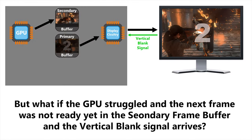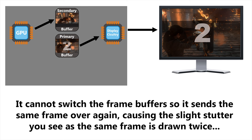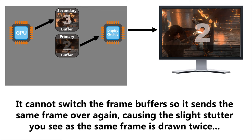But what happens if the action in the game ramps up on the next frame and the GPU can't keep up? What happens if the next frame isn't ready when the V-Sync signal arrives? The frame buffer can't be swapped, so the video card does the only thing it can do — it sends the monitor the same frame over again. This is the cause of that momentary stutter you see in a game. The next frame wasn't ready in time, so the same frame was shown twice. What if your GPU consistently just can't manage the 60 frames per second that this 60Hz monitor needs? If it's just slightly too late every time, the monitor's going to draw 60 frames per second, and if we're late and end up repeating a frame every time, we're essentially getting 30 frames per second. Not good.